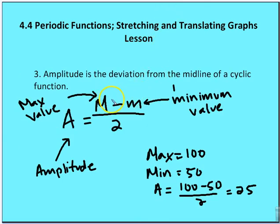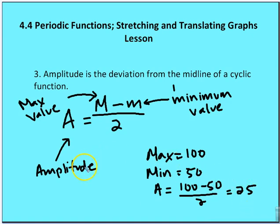Amplitude is the deviation from the midline of a cyclic function — not to be confused with the overall height from maximum to minimum. We find the amplitude by taking the maximum value capital M minus the minimum value lowercase m, then dividing by 2. For example, a maximum of 100 and minimum of 50 gives 100 minus 50 over 2, which equals 25. Amplitude is denoted as a positive number, although a negative sign can appear in front of it in the periodic function equation.